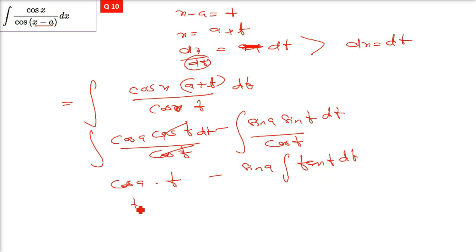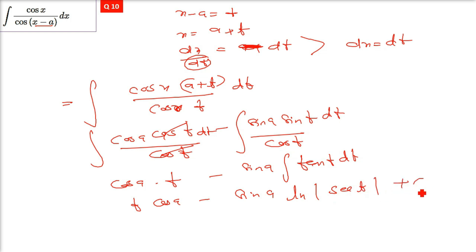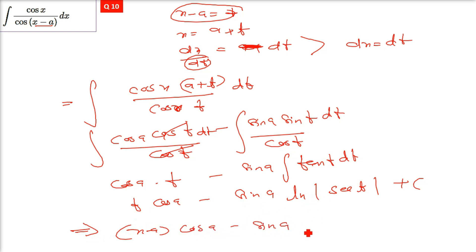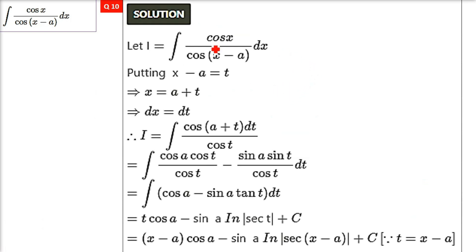The integration result is cos(b−a)·t − sin(b−a)·ln|sec(t)| + C. Replace t with (x−b): cos(b−a)·(x−b) − sin(b−a)·ln|sec(x−b)| + C. That is your final answer — a clean printed version.